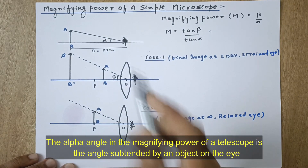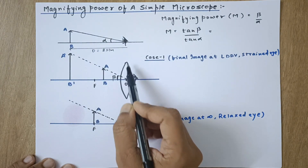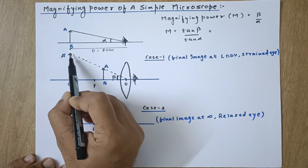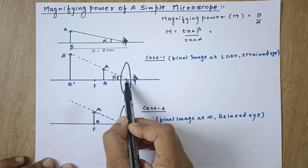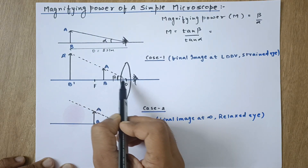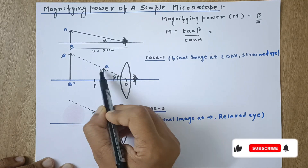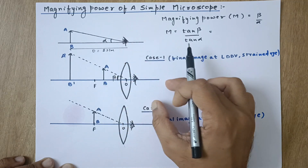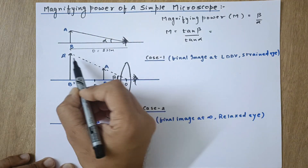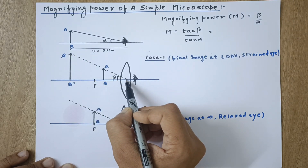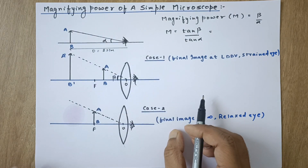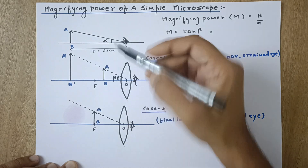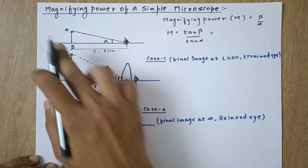Now we will keep the same object between f and o of the convex lens and produce its virtual and enlarged image. The head of the image makes a certain angle beta at the optical center of the lens — or the eye, because the eye is very close to the lens. The ratio of beta to alpha is known as the magnifying power. So, by how many times the angle is enlarged is the magnifying power.